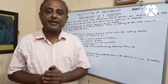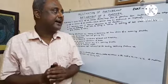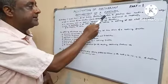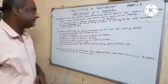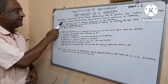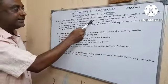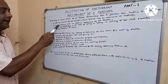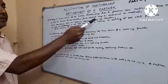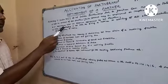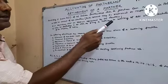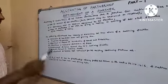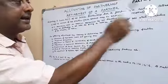First, today we have to know when a partner can retire. According to Section 32, Subsection 1 of the Indian Partnership Act, a partner can retire in three ways. A: with the consent of all partners — such consent may be expressed or implied. B: in accordance with an express agreement by the partners. C: where the partnership is at will, by giving a notice in writing to all other partners of his intention to retire. These are the three ways a partner can retire.